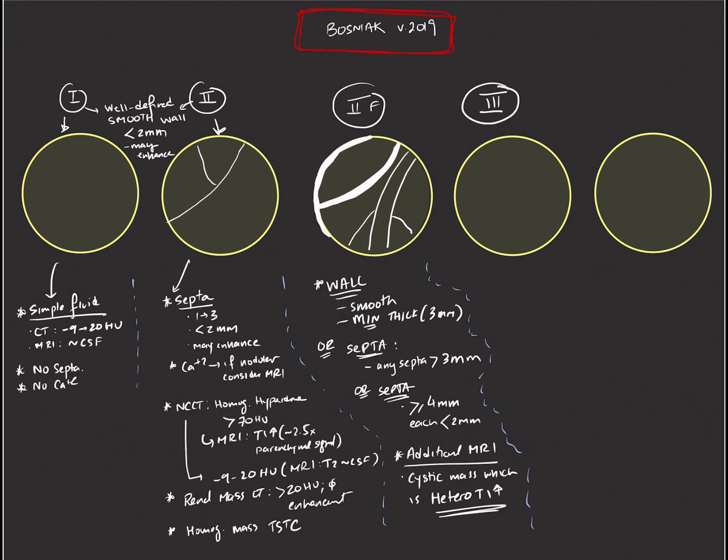Move on then to Bosniak 3 lesions. Bosniak 3 lesions have increasing levels of complexity. In these instances, there may be an intermediate probability of malignancy, and so urology consult should be suggested. For Bosniak 3, we're going to look at the walls of the lesions or we're going to look for internal septations within these lesions. Either the walls or septations will be enhancing in Bosniak 3 lesions, but in addition to that, they will be thick. We're talking about thickness of more than 4 millimeters.